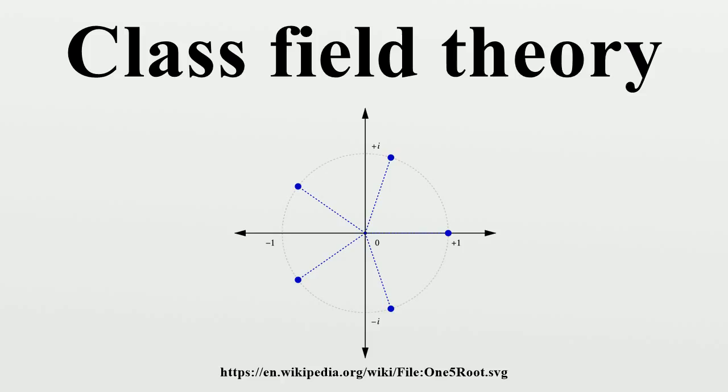To the Galois group of the maximal abelian extension of the global field. Each open subgroup of the ideal class group of a global field is the image with respect to the norm map from the corresponding class field extension down to the global field.